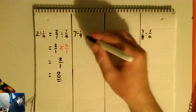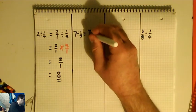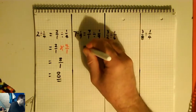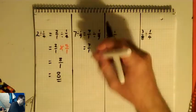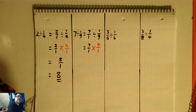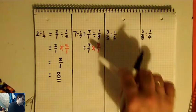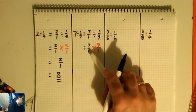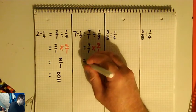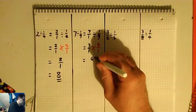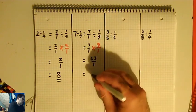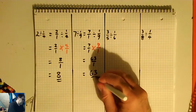Next one: seven divided by one-ninth. So that's the same as seven over one divided by one-ninth. Then we flip the ninth into nine over one and change it to a multiply. Remember, you're always only flipping over the second one — some people make the mistake of flipping them both over. Seven times nine on the top is 63, one times one on the bottom is one, so we've got 63 over one, which is just 63.